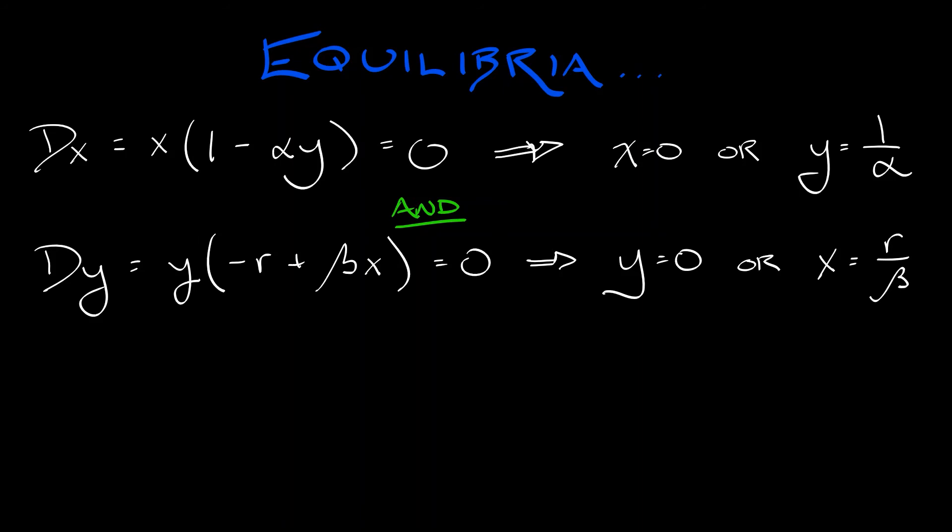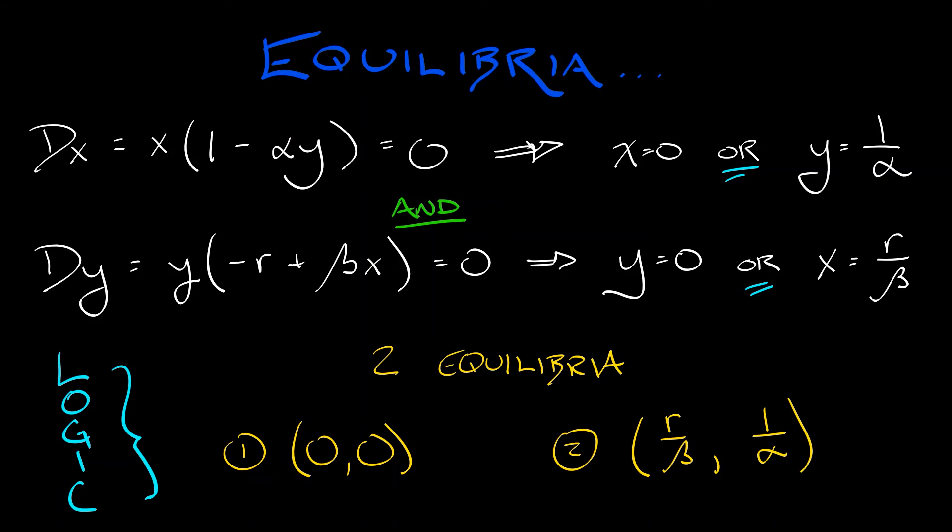There's a bit of logic going on here with ands and ors, but with a little work, we see there are exactly two equilibria. The first is at (0,0), which is boring - everybody's dead and there's nothing. The second equilibrium is where x = r/β and y = 1/α. These are both positive numbers. This is a coexistence equilibrium where the predator and prey are in equilibrium, and everyone's happy - as happy as prey can be.